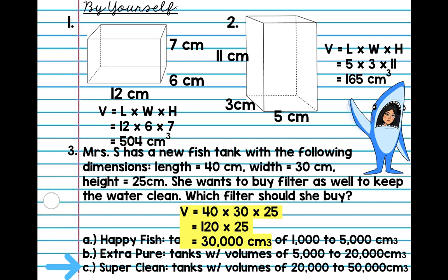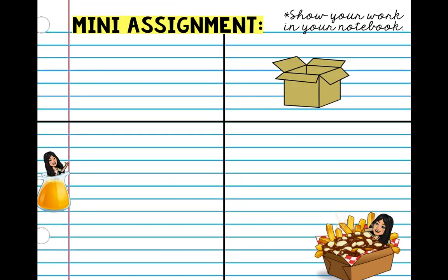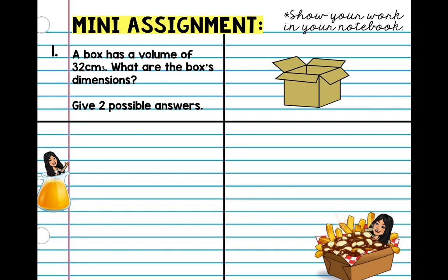There you go, guys. For your homework today, you only have four problems to do. Number one, you're going to figure out two possible answers with a box that has a volume of 32 centimeters cubed. So, just give me two options of how big that box is going to look. Number two, find the volume of this box.